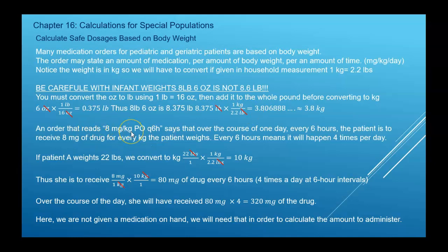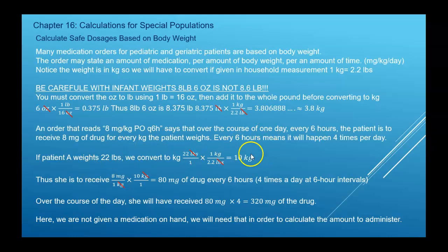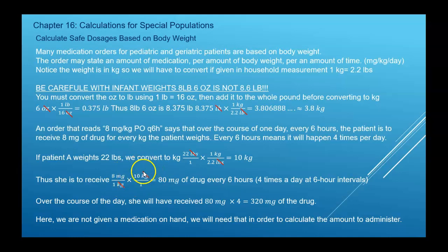So an order that reads 8 milligrams per kilogram every six hours means you're going to administer 8 milligrams for every kilogram of body weight. Because it's every six hours, that means it's going to happen four times a day. So a patient who weighs 22 pounds — convert that to kilograms — it's 8 milligrams per kilogram, so you can easily multiply that by 10 and get 80 milligrams of drug every six hours.